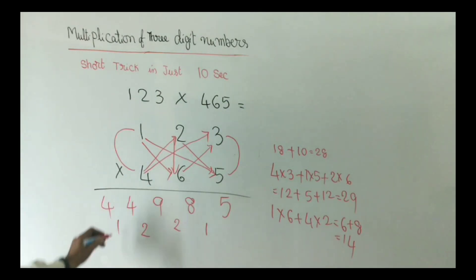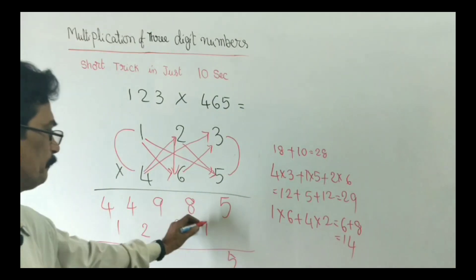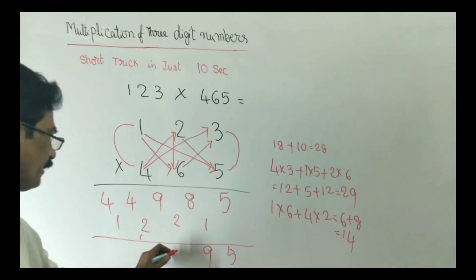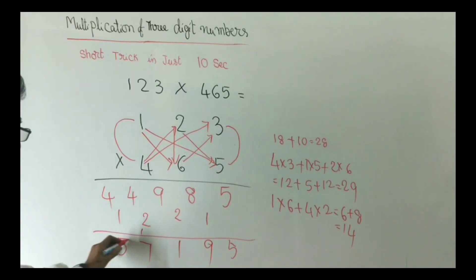Last step: 1 into 4, 4. Now addition: 5, 8 plus 1, 9, 9 plus 2, 11, 4 plus 3, 7, 4 plus 1, 5.